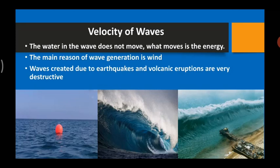Such waves assume a great height in the shallow waters near the coast and are called tsunamis. These waves are very huge in size and very destructive, causing huge loss of property as well as life. For example, in 2004, tsunami waves were generated because of an earthquake that took place near the Sumatra island of Indonesia. They devastated the east coast of India as well as Sri Lanka.